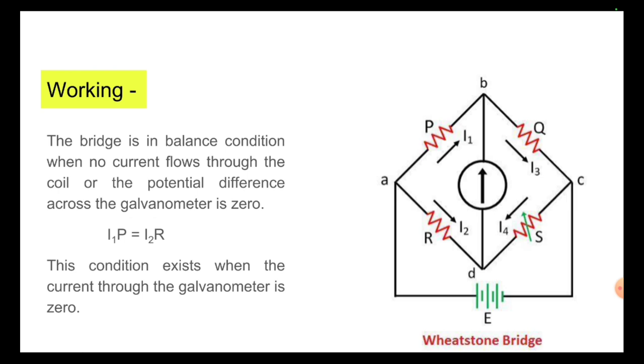That is, the voltage drop across the P resistance is equal to the voltage drop across the R resistance. This condition exists when the current through the galvanometer is zero.